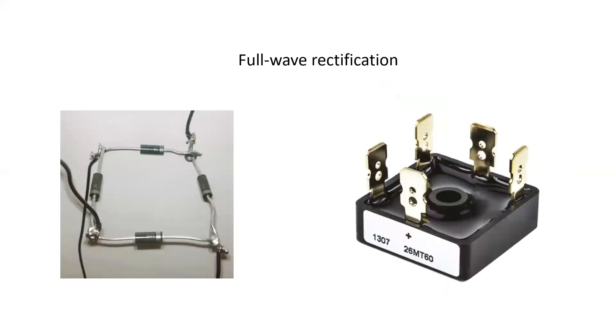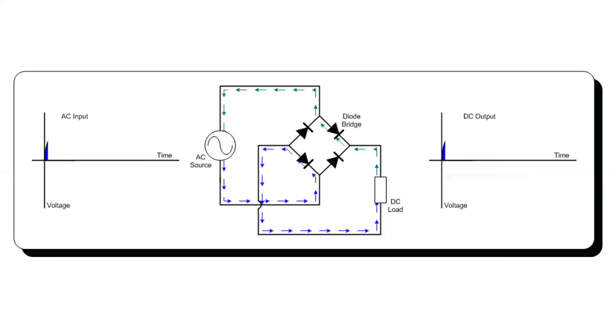By contrast, a full-wave rectification system uses four diodes, either manually assembled together and soldered, or as a single solid state component, which we see on the right-hand side. There are two connections for AC and two connections for DC. In this situation, we have not only the positive alternation on the AC sine wave, but the negative alternation that is then translated to positive on the DC output side. We have four diodes where a pair is conducting at any given moment.